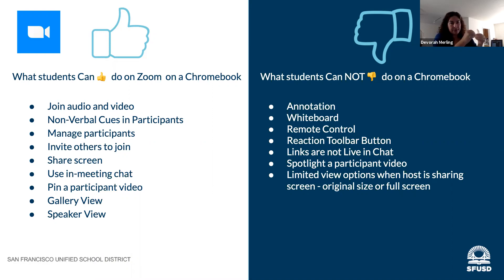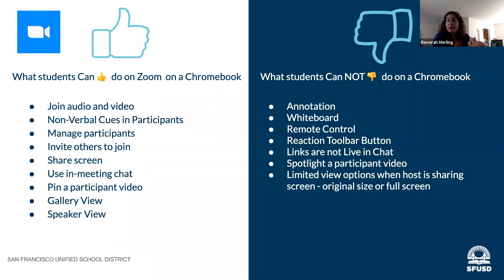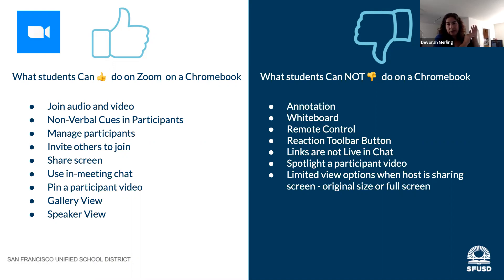This is really important: if you put a link in the chat, on Chromebooks it doesn't come out as a live link. You need to either teach your students to copy and paste it, or find another solution for sharing live links during your synchronous lessons. Also, students don't have the spotlight tool — they have the pin tool but not spotlight — and their view options are limited to original size or full screen, whereas teacher laptops have many more options.